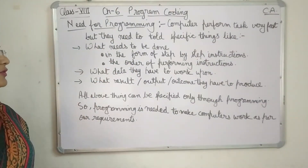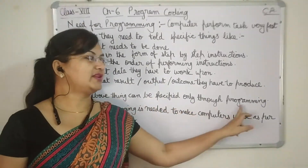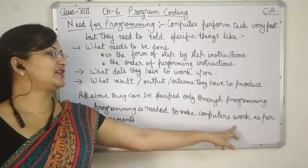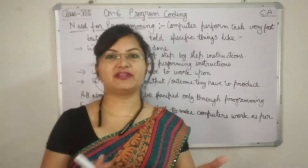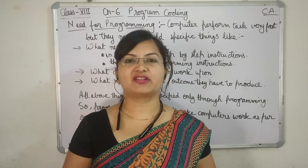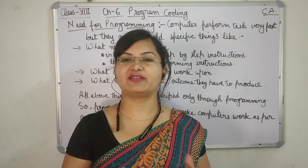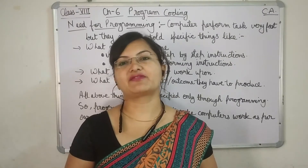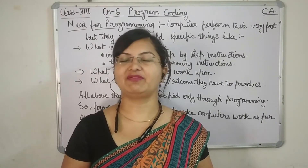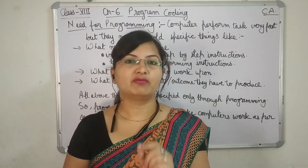All these things can be specified only through programming. Once we have an algorithm or flowchart, we can convert it into a programming language. Programming is needed to make the computer work as per our requirement, because the computer will not understand an algorithm or flowchart. BlueJ software will convert the Java program into machine language so that the computer can understand it — computers understand only machine language, which is binary: 0 or 1.